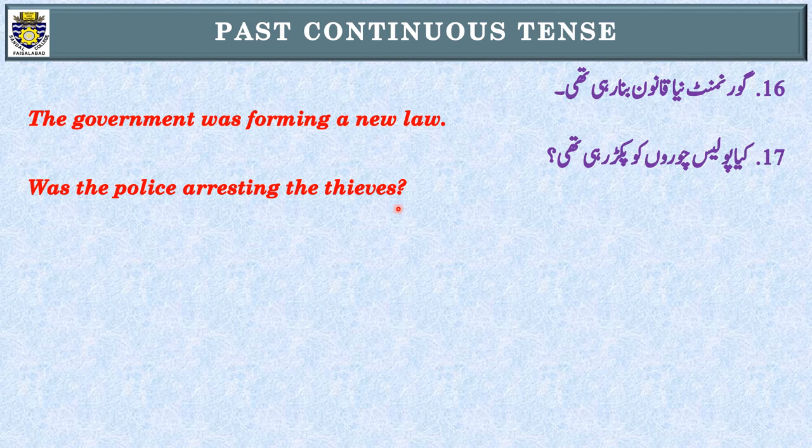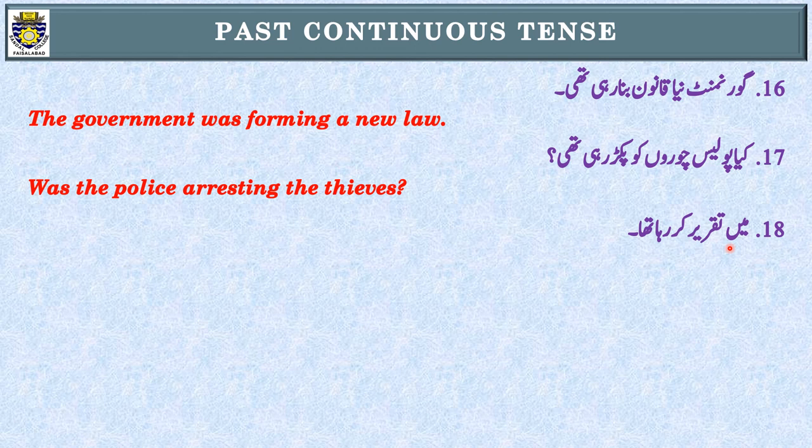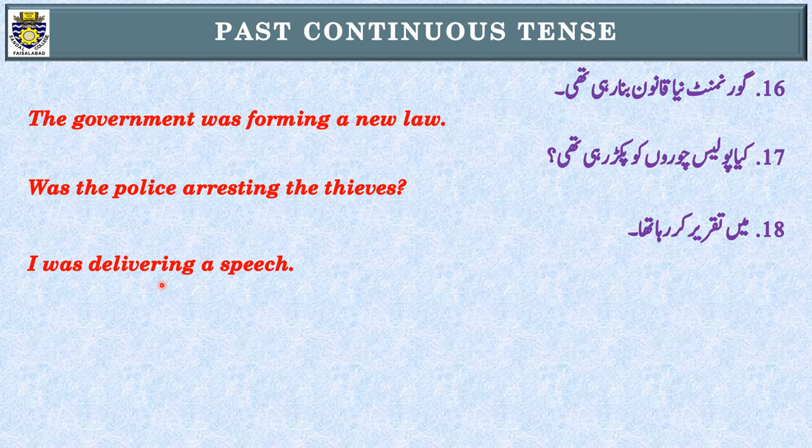Sentence number eighteen: مَیں تقریر کر رہا تھا۔ First step: 'رہا تھا' — Past Continuous Tense۔ Second step: subject — 'مَیں'، English I۔ I کے ساتھ Past Continuous Tense میں was use کرتے ہیں، پھر verb کی first form plus ing: I was delivering a speech.